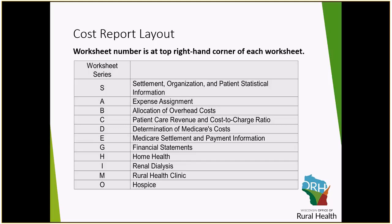You can see here on this graphic on the screen — all of the worksheets have a letter that corresponds to the different series. Each of those different series of worksheets has a specific section of the cost report data that is reported in it. In this first video, we're just giving a high-level overview, and we'll go through Worksheet S. The next series of videos will go through Worksheets A and B, which are more on the expense side. Worksheets C, D, and E will be covered in video number four, where we will be reporting most of the revenue information. It's just a high-level breakdown of what all the different cost report worksheets look like and a basic description of what information is reported on those worksheets.